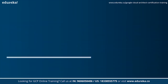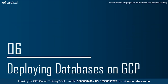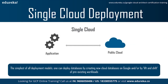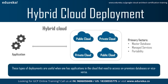Now let's understand the methods of deploying databases on Google Cloud Platform. GCP predominantly offers three types of reference architecture models. The first is single cloud deployment — the simplest model, where you deploy databases by creating new cloud databases on Google, or by lift-and-shift of pre-existing workloads. The second is hybrid cloud deployment — useful when applications in the cloud need to access on-premises databases, or vice versa.